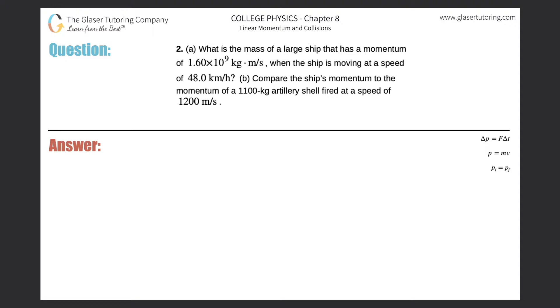Number two, letter A. What is the mass of a large ship that has a momentum of 1.6 times 10 to the 9 kilogram meter per second when the ship is moving at a speed of 48 kilometers per hour? First, let's take a look at letter A. They're asking us for the mass, they tell us the momentum, and they give us a speed.